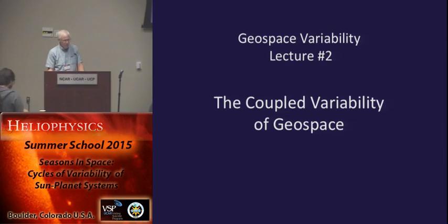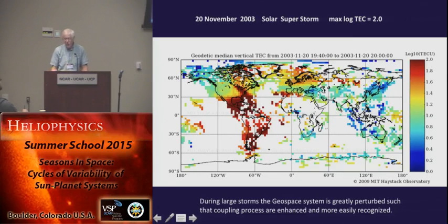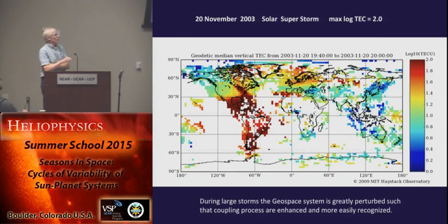We're going to talk about Coupled Variability of Geospace Part 2. This is just saying that in disturbed times, during large storms, the geospace system is greatly perturbed such that coupling processes are enhanced and more easily seen.